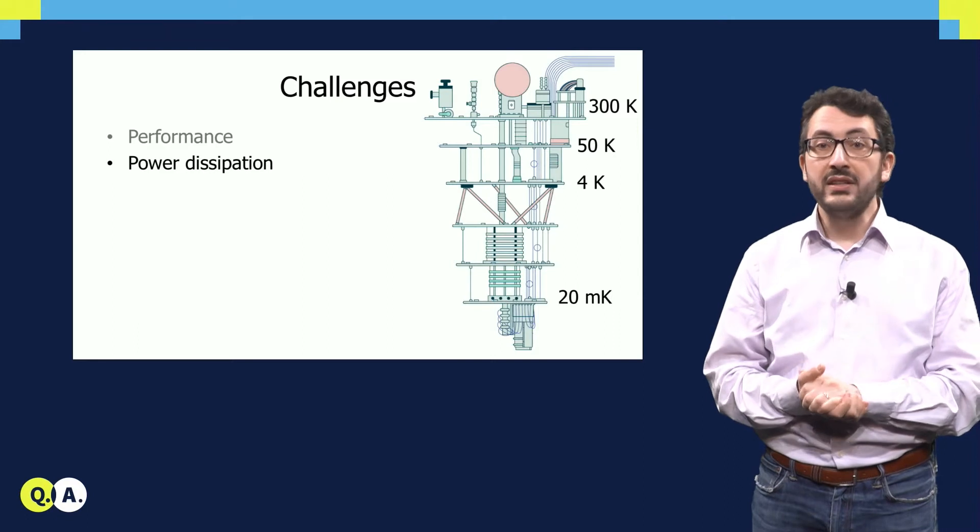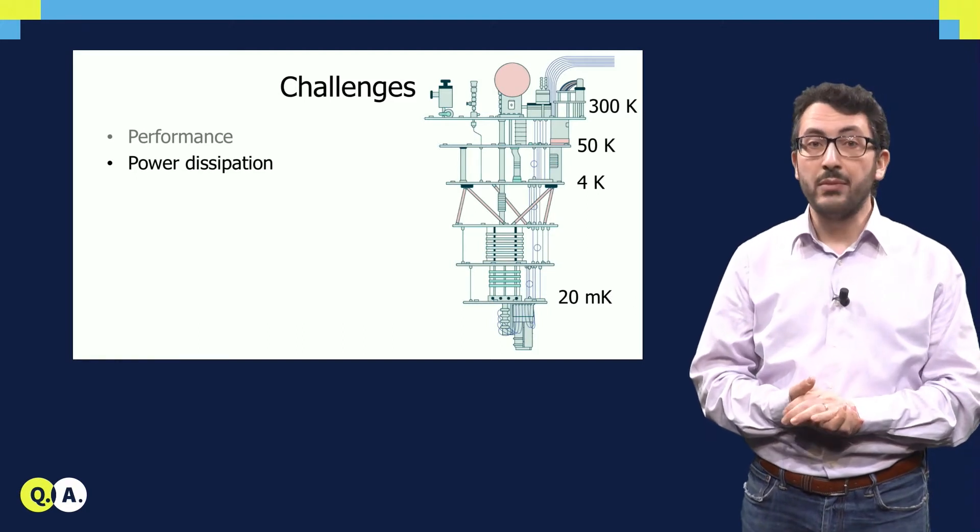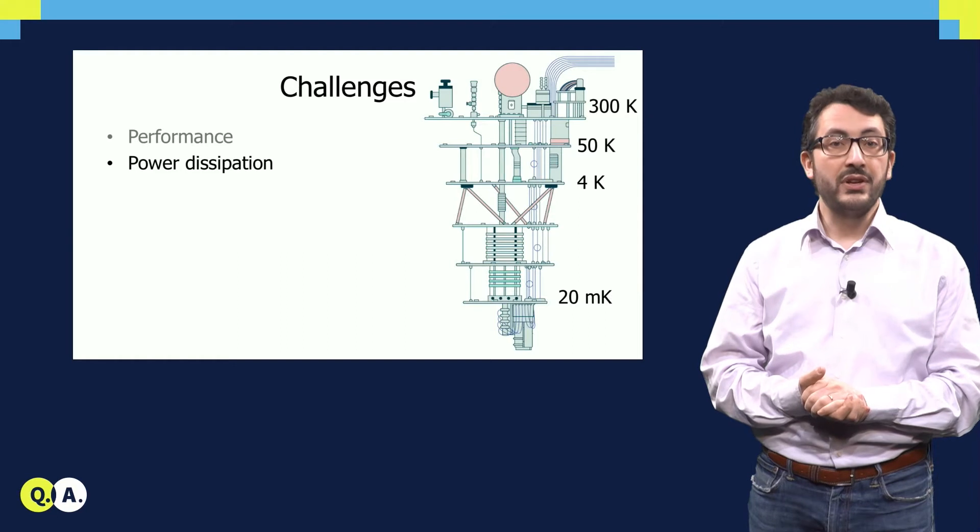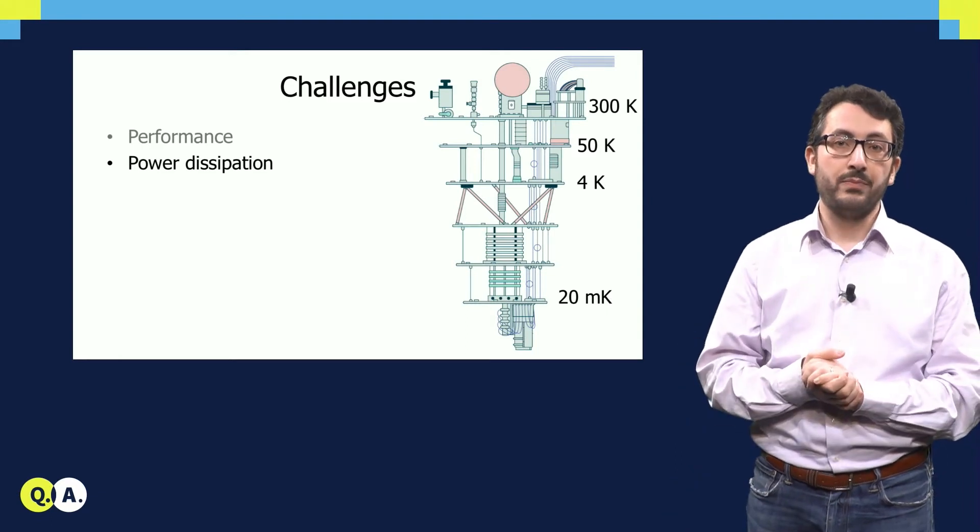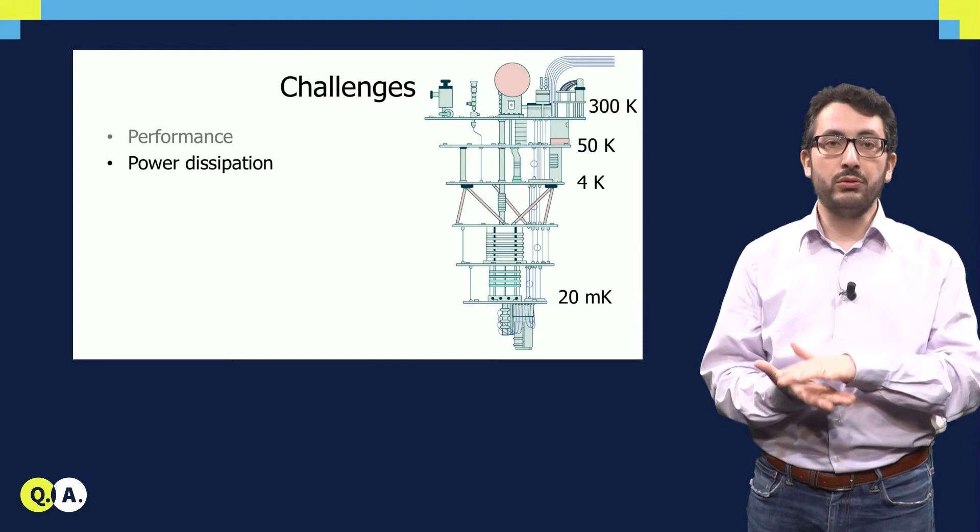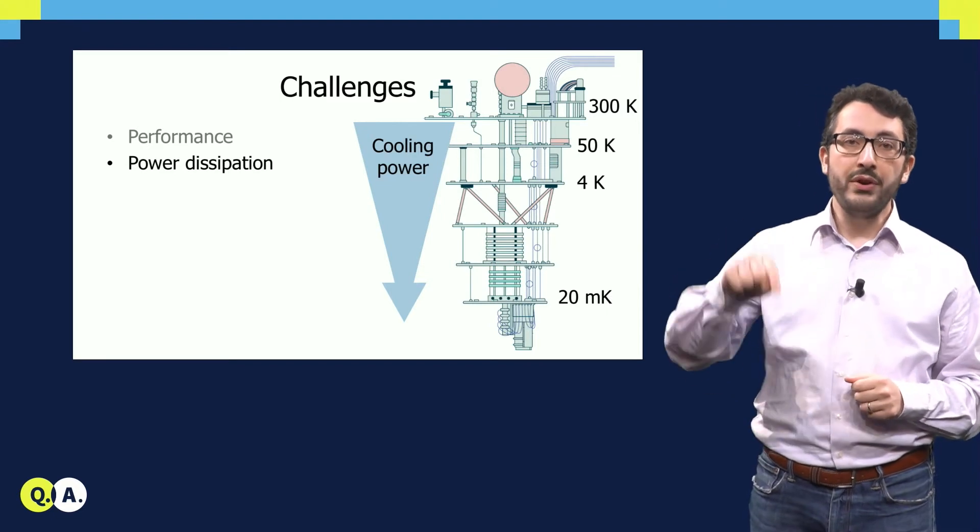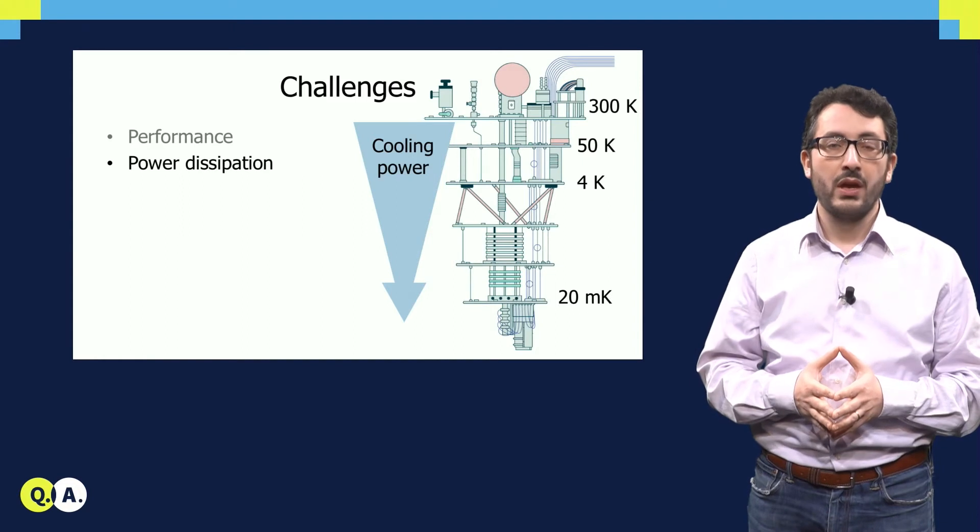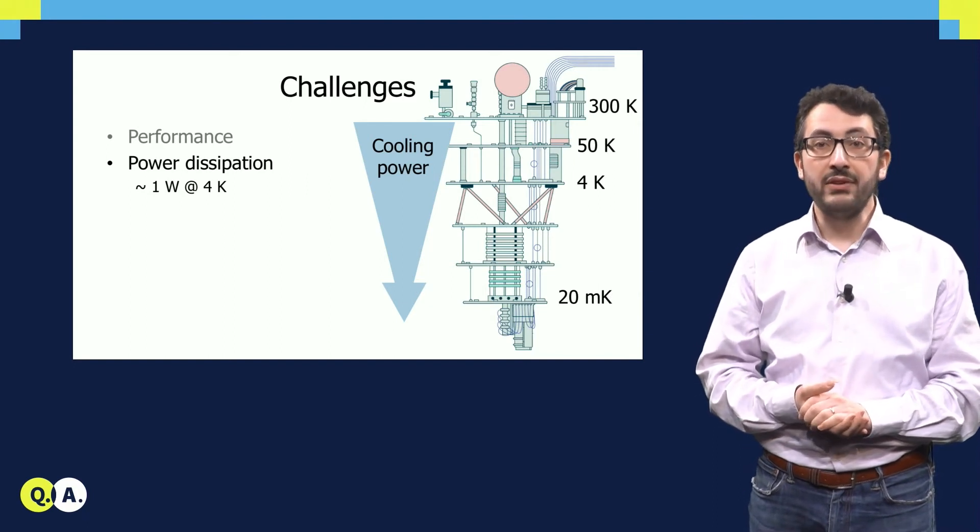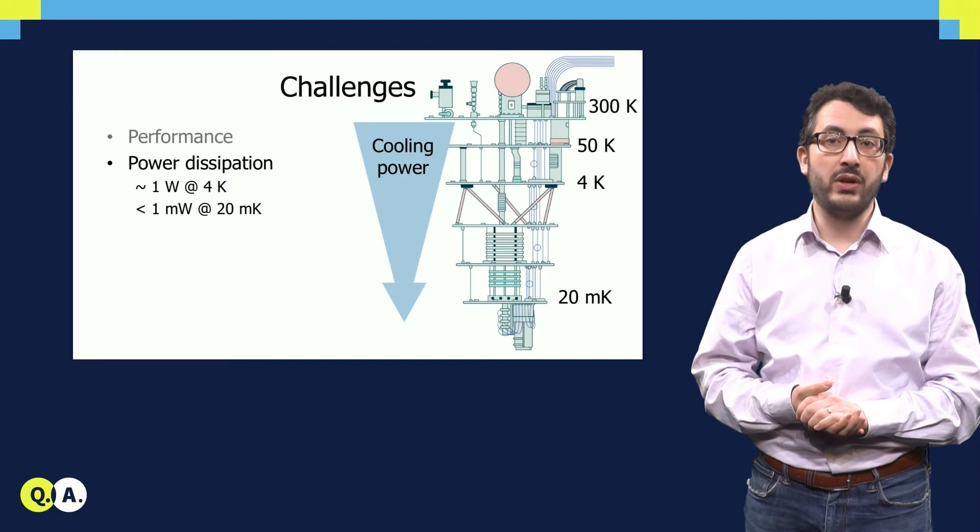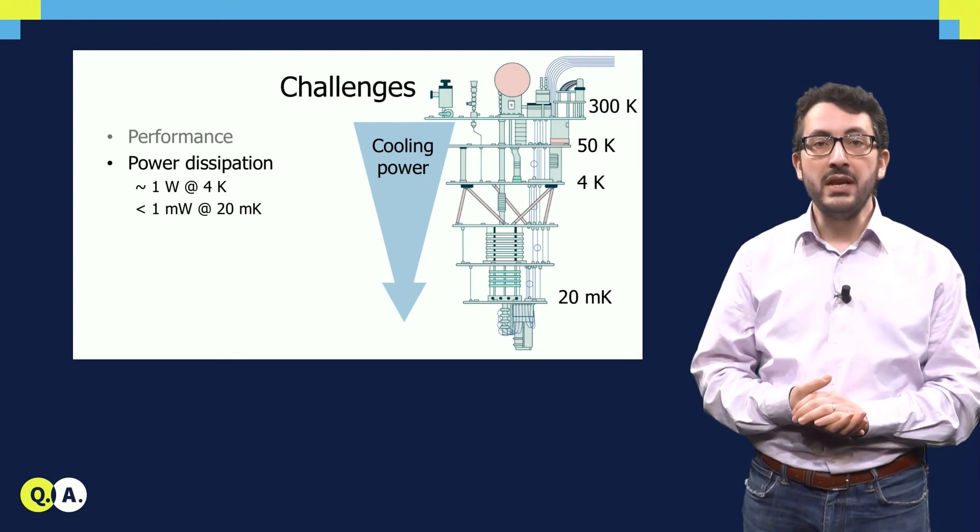The second challenge is that you have to operate these electronics at cryogenic temperature, so typically you want to place it in a refrigerator. You see a simplified diagram on the right. The refrigerator has different stages at different temperatures. The qubits are typically placed at the lowest stage at the lowest temperature, and you want to place the electronics as close as possible to the qubits. What's the problem? The problem is that the lower you go in temperature, the less cooling power you have available in the fridge. So for example at 4K you only have 1 W of power available, and if you go to 20 mK, you even have much less than mW. So the challenge here is to build all these electronics while dissipating the minimum amount of power.